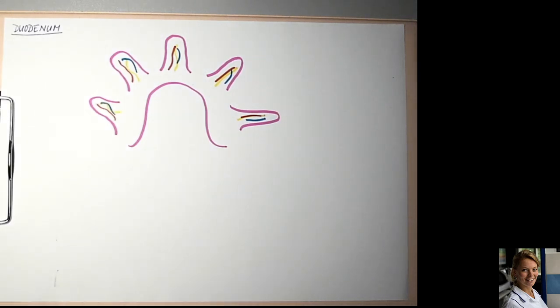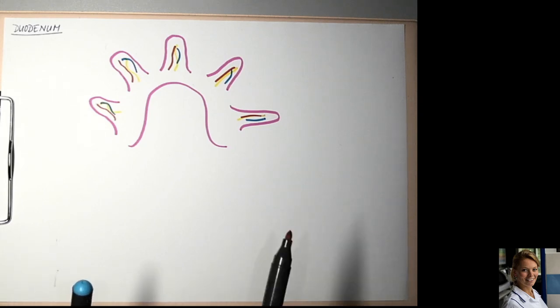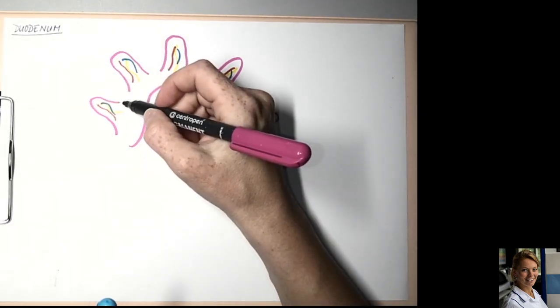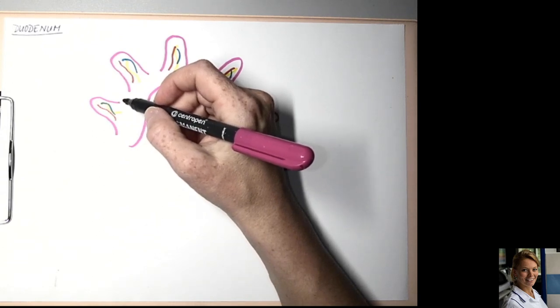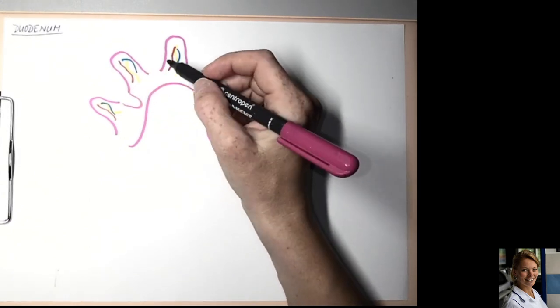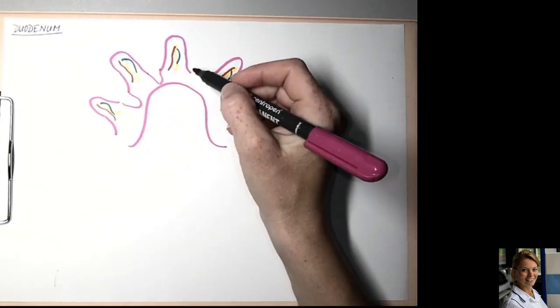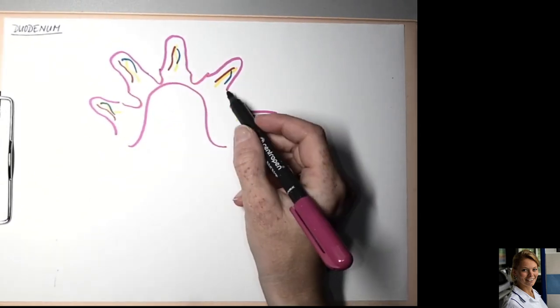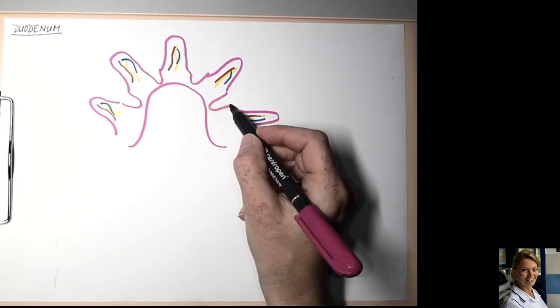There are also intestinal glands or crypts of Lieberkühn, which also increase the absorption surface. They are simple tubular glands located between villi.